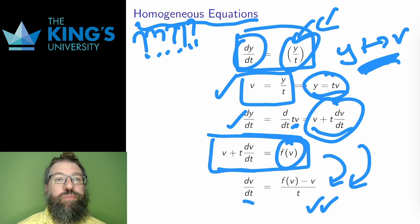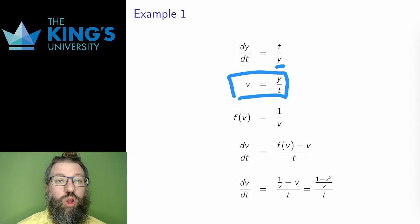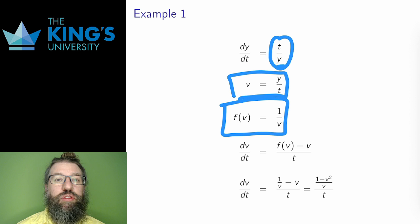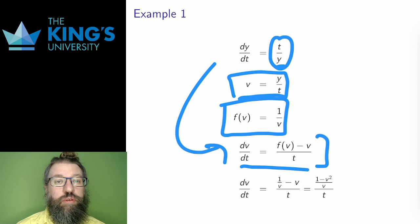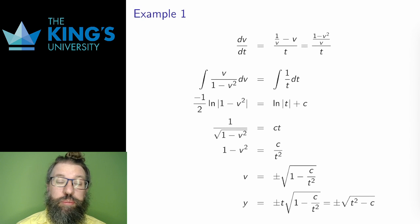Let me do an example: dy/dt equals t over y. The substitution I'm looking for is y over t, so t over y is the reciprocal — my function on the right is 1 over v. Going directly to the form, dv/dt equals f(v) minus v over t. Replacing f(v) with 1/v and going to a common denominator gives me a separable equation. Here are the steps to solve it as a separable equation.